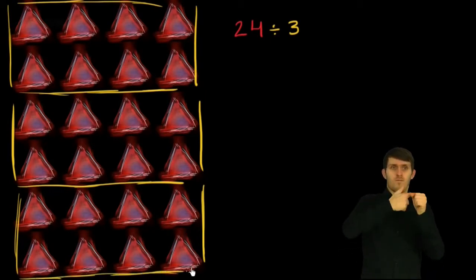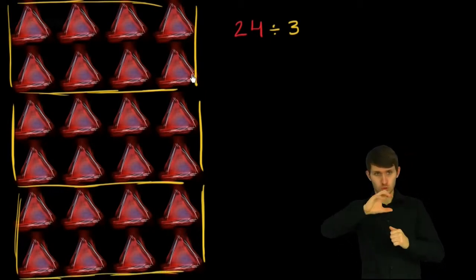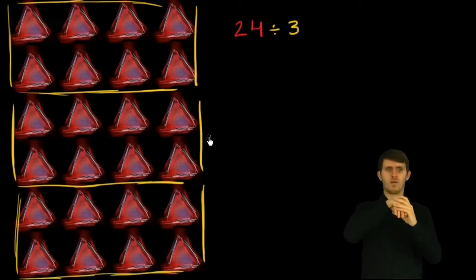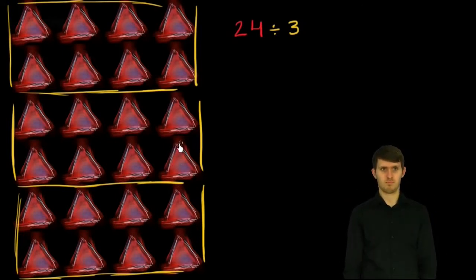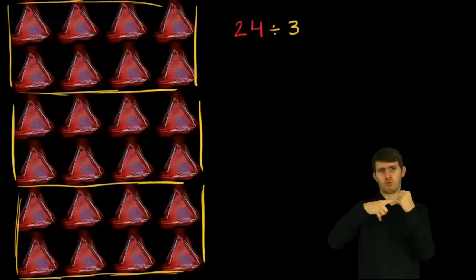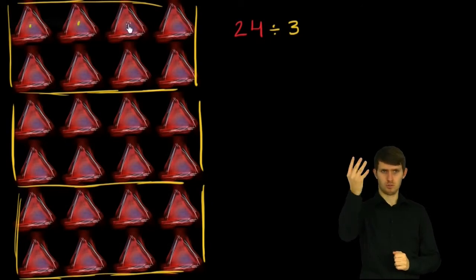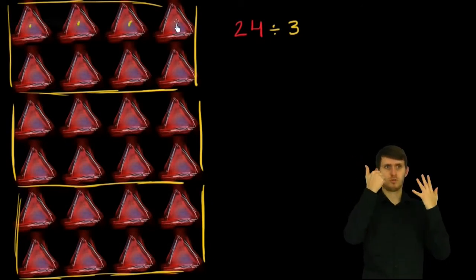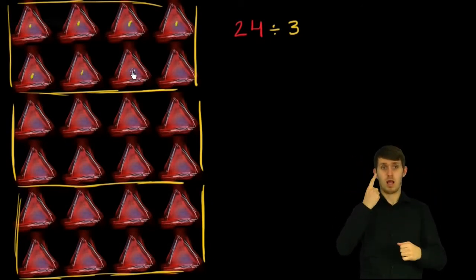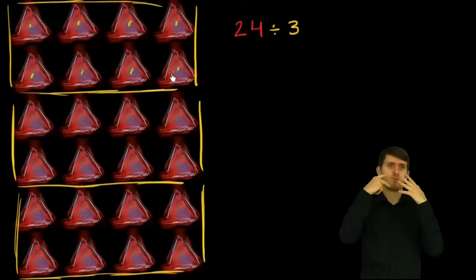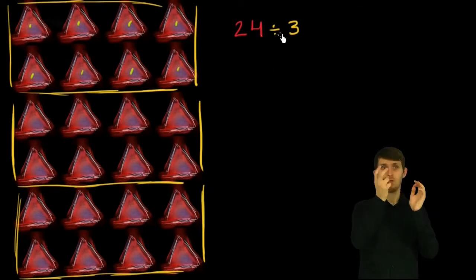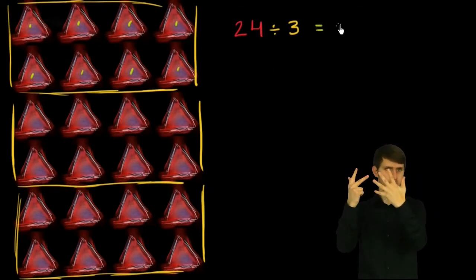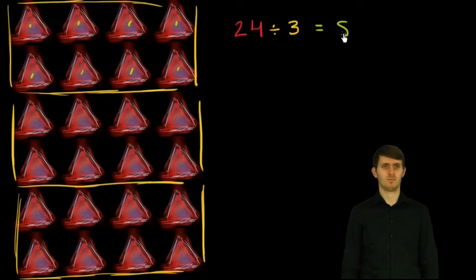So if I divide 24 into three equal groups, how many are going to be in each group? Well, we can count that — we have 1, 2, 3, 4, 5, 6, 7, 8 in each group. So we could say that 24 divided by 3 is equal to 8.